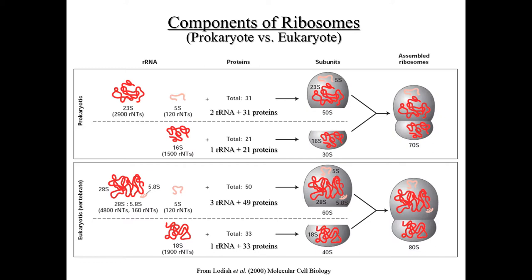In both prokaryotes and eukaryotes, your large and small subunits join to form the full functional ribosome. They will only attach together when they attach to an mRNA molecule. Otherwise, in the cytoplasm, they exist as separate large and small subunits, only coming together to form your ribosome when attached to the mRNA.